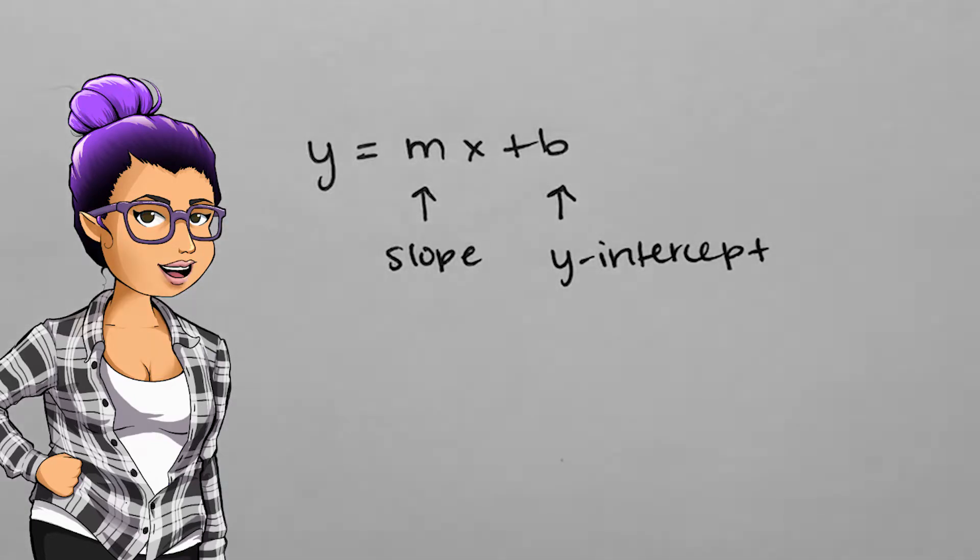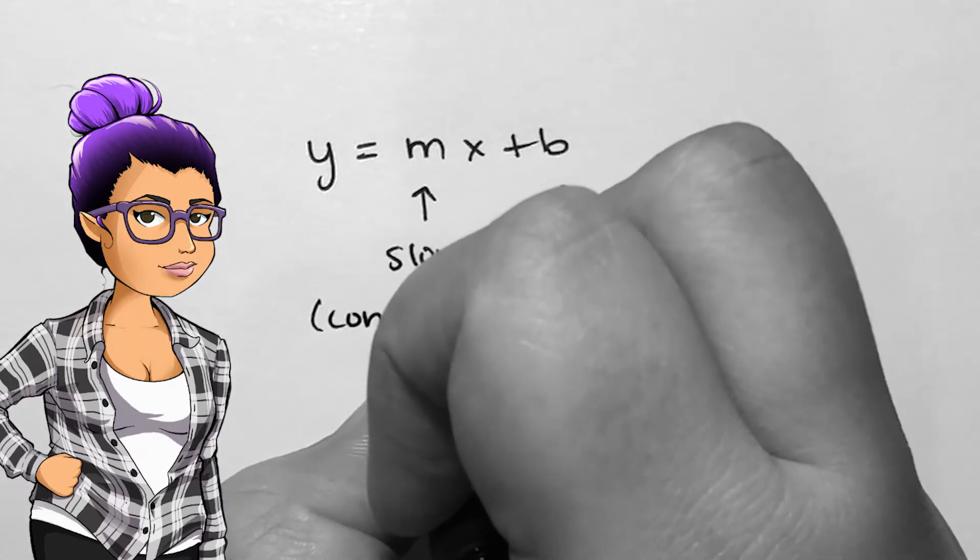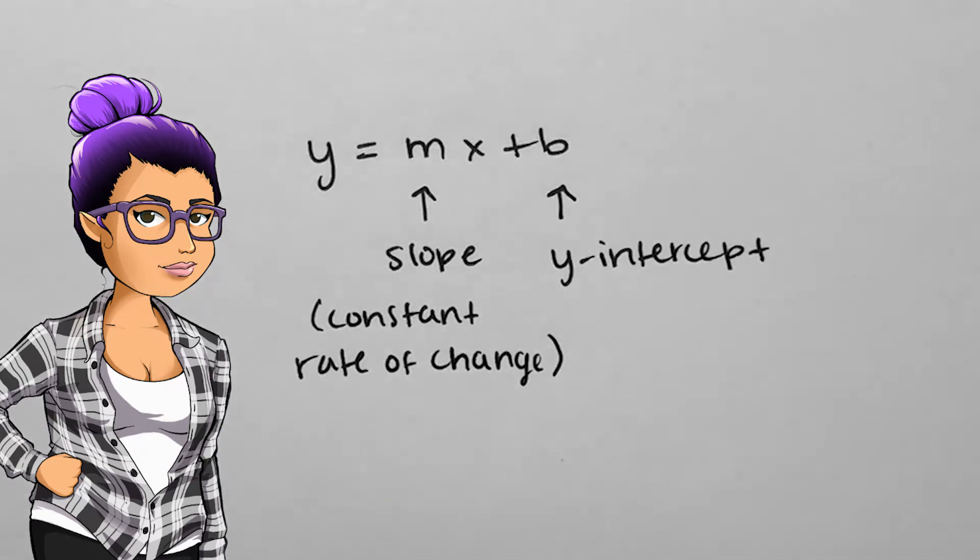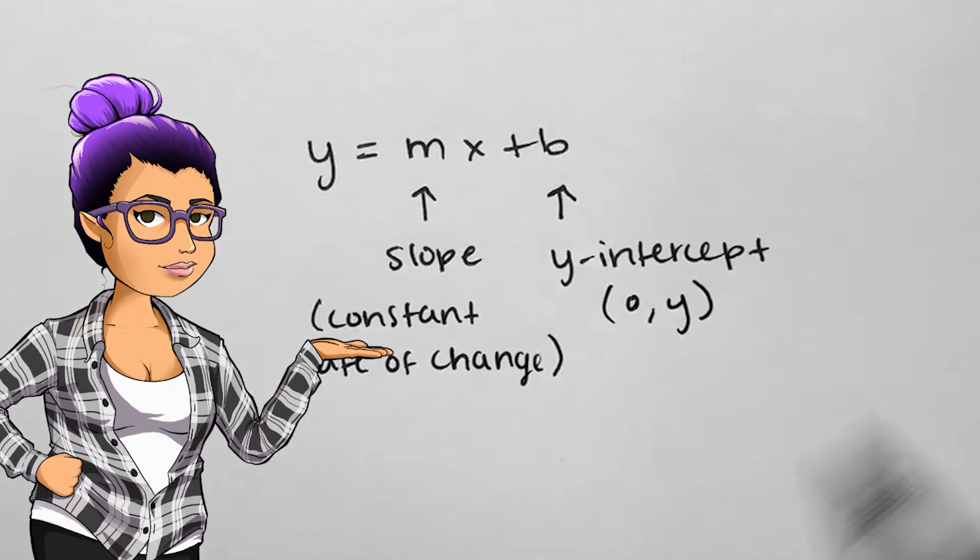Surprisingly, this is called slope-intercept form. The slope is the constant rate of change. The y-intercept is where a graph intersects the y-axis, or where x is 0.